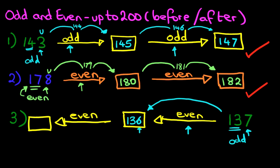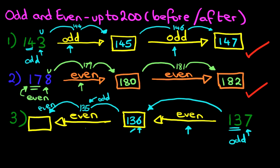And the even number before 136 — well, we're going to do two jumps. Why are we going to do two jumps? Because 136 is an even number, so the number before it is going to be odd. The number before 136 is 135, and that is odd. The number before that is 134, and that is an even number.